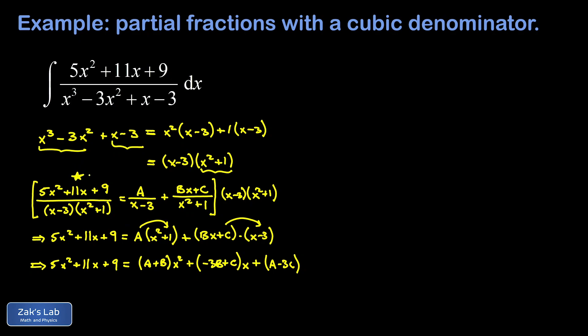This whole setup started with the assumption that the rational function 5x squared plus 11x plus 9 over (x minus 3)(x squared plus 1) can be written as two simpler rational functions added together. We're not finding a specific value of x — we're saying these two functions are literally equal for every value of x. The only way that happens is if every coefficient of each power of x is equal on both sides.